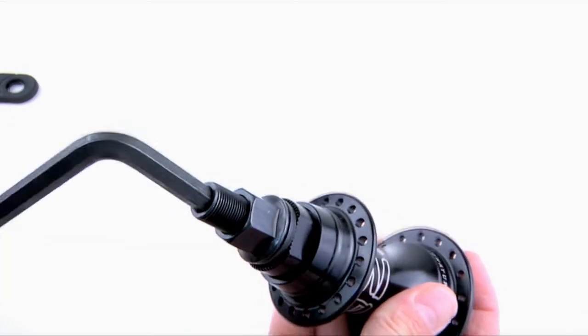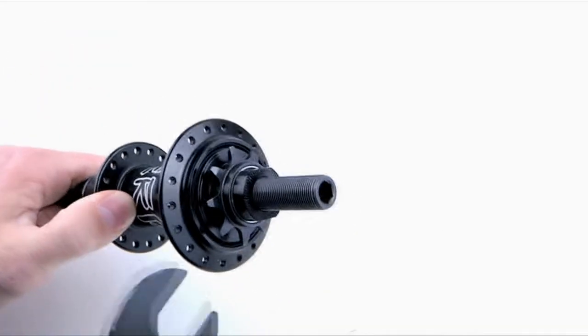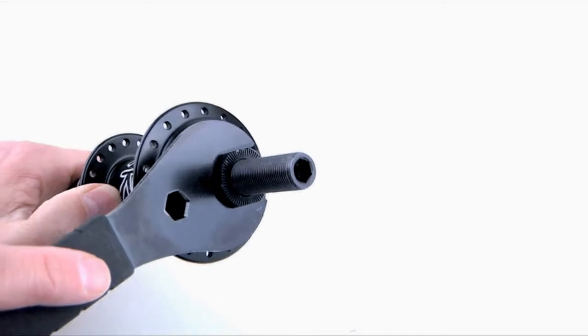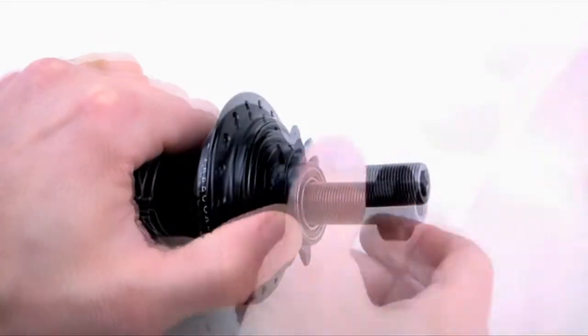Insert the 8mm Allen wrench into the non-drive side of the axle. On the drive side, loosen the 21mm cone nut beside the driver and completely remove the cone nut from the axle.